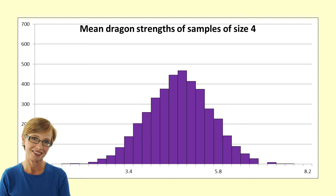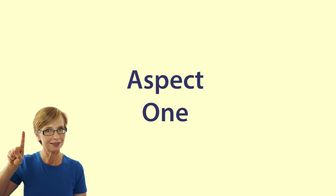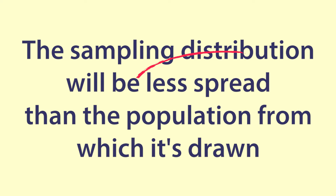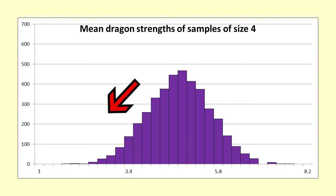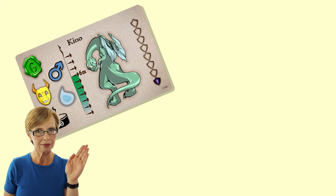Let's look at the four aspects mentioned before. Aspect one: The sampling distribution will be less spread than the population from which it is drawn. You can see that most of the sample means lie between three and six. And all of them lie between 1.75 and 7.5. Remember the population values lie between one and eight.